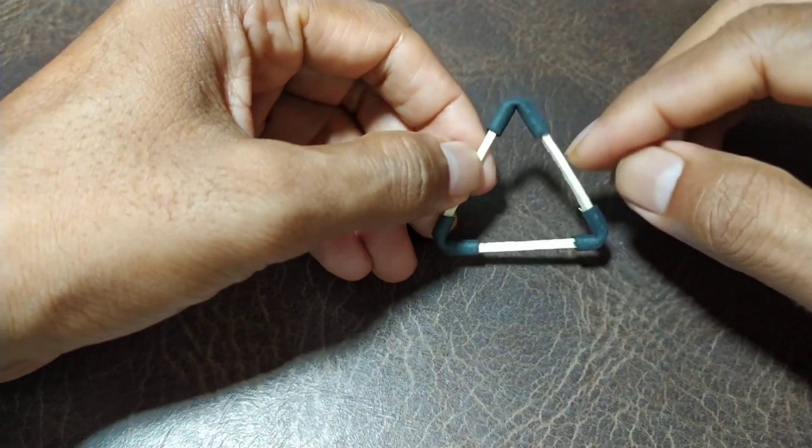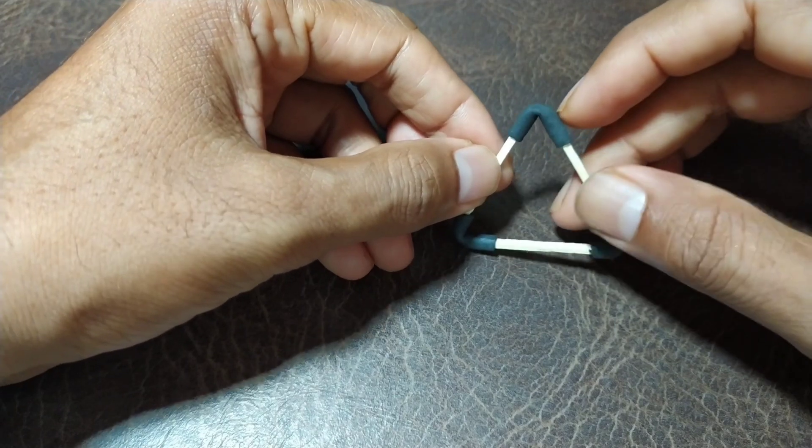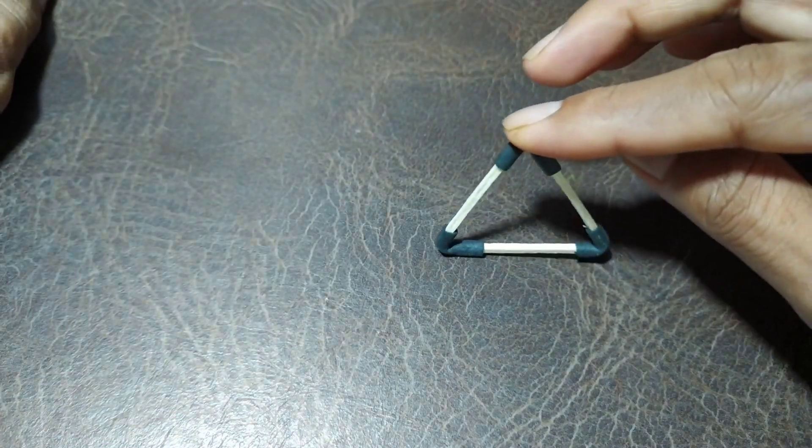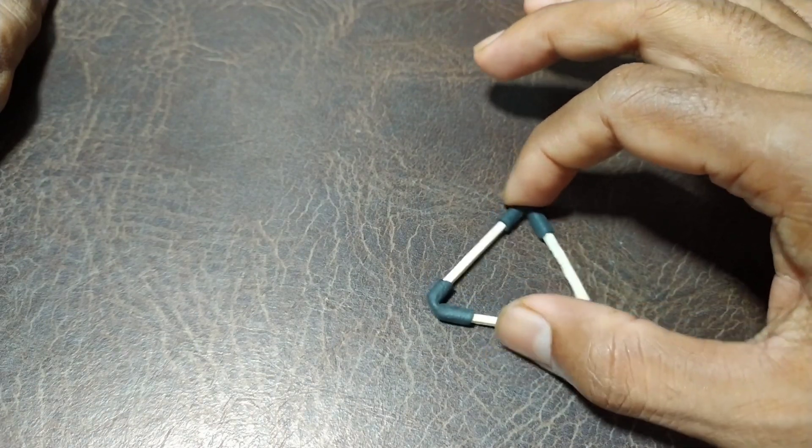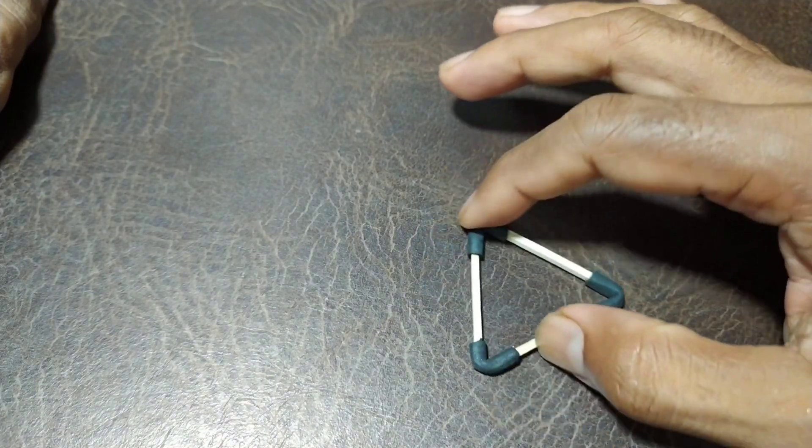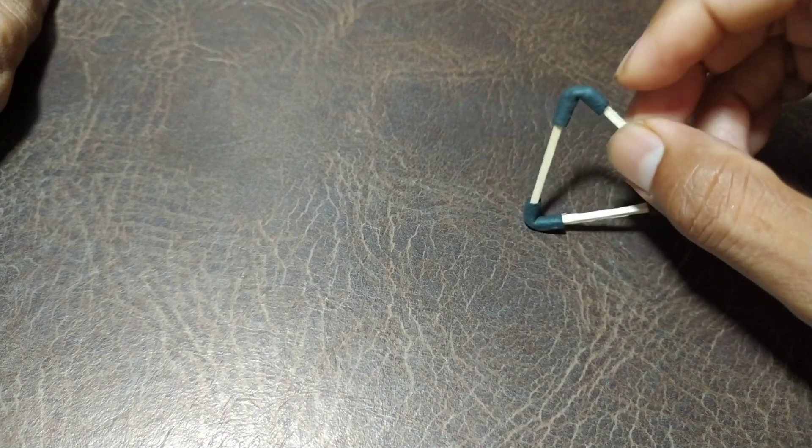Finally, we have a triangle with us. And if we put pressure on it, we'll find that it hardly changes its shape. The triangle is capable of bearing heavy load without deforming its shape. It will give more stability to the structures.